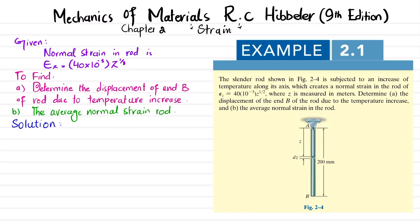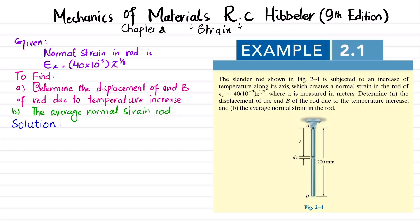Due to this increase in temperature, the strain in this rod is as written. We have to find the displacement of point B — how much it displaces downward — and in part B, the average normal strain in the rod. We will take a small portion dz located at a distance z from the top point A, with z measured along the z-axis.